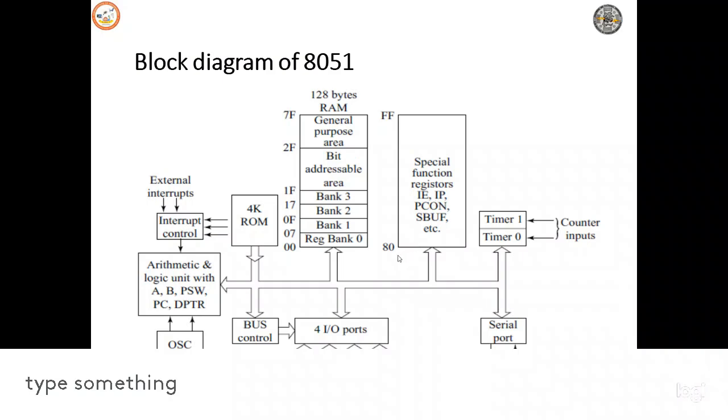And it has a special function register from your RAM location ATH to FFH. Special function register includes IE, interrupt enabler, and IP, interrupt protocol, then PCON. This is a register which is used during the communication and S buffer. This is also the register used in the serial communications.